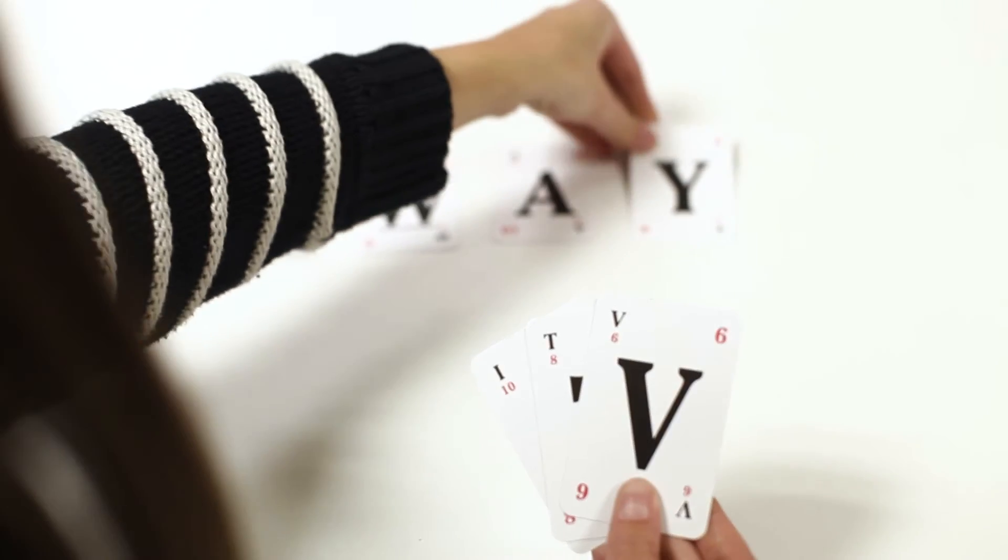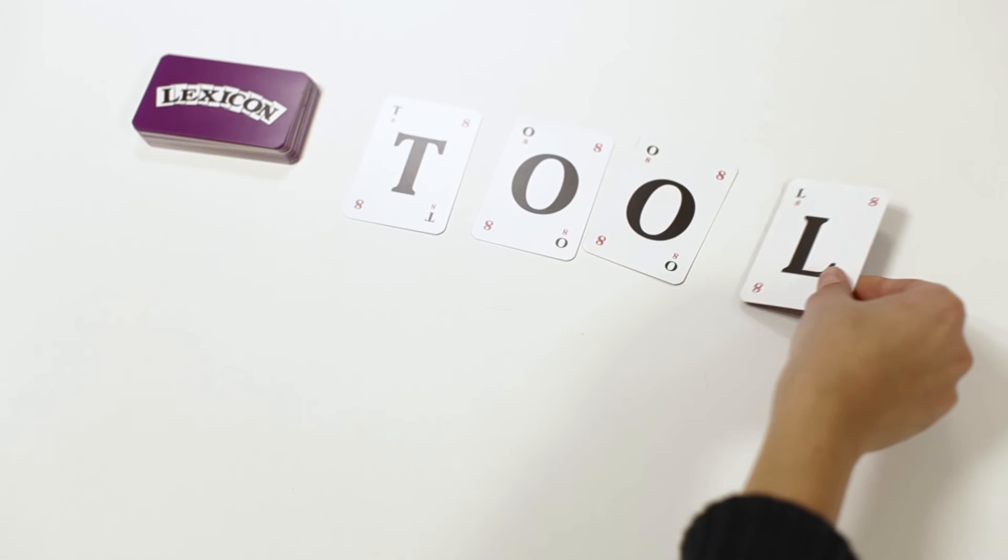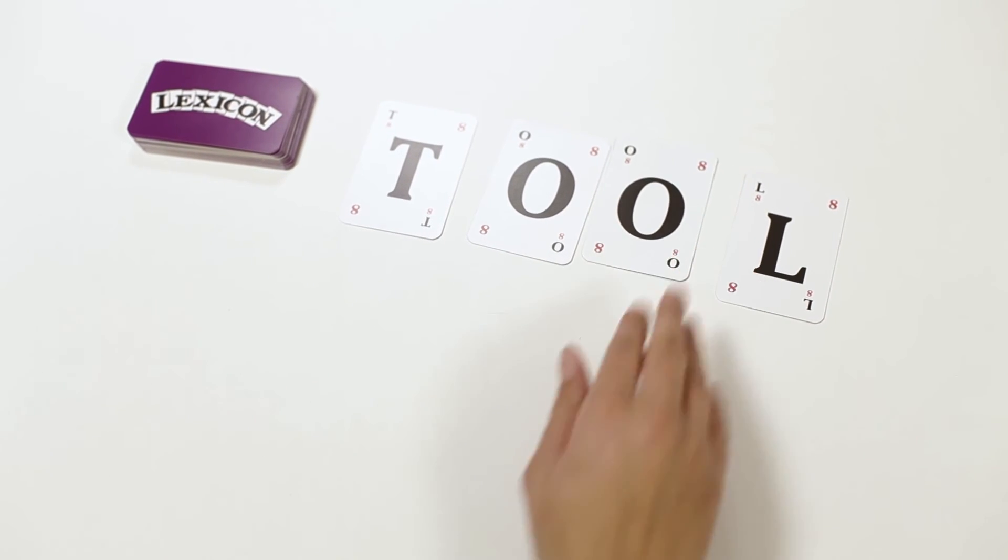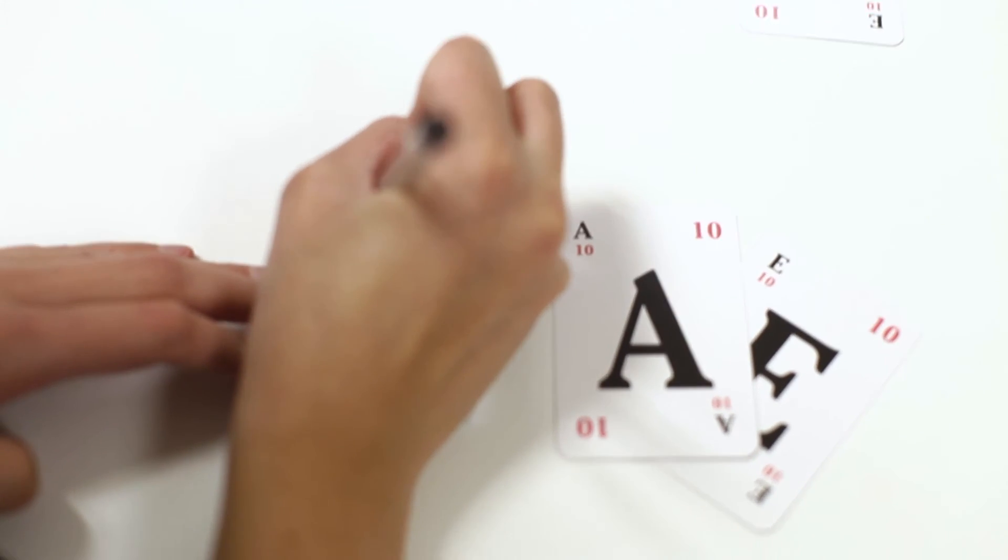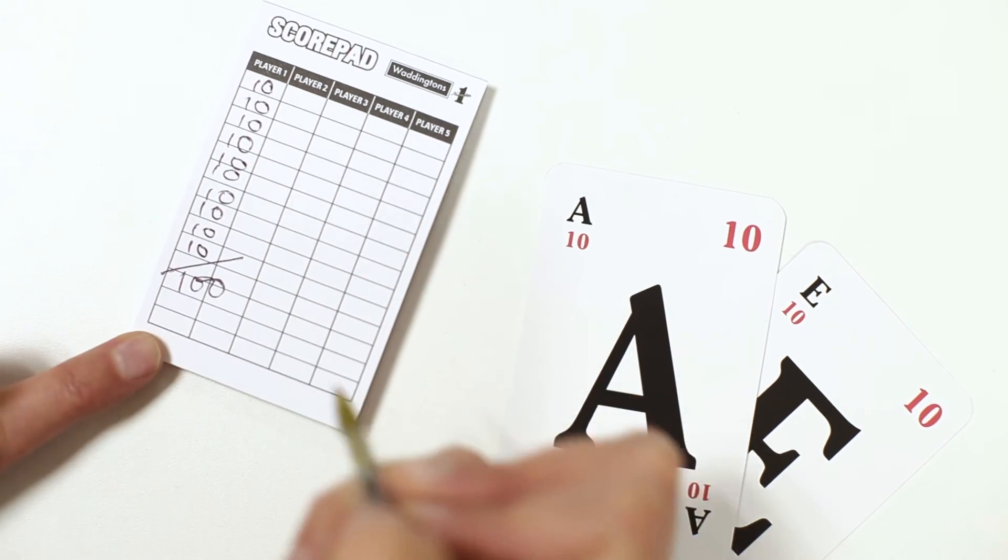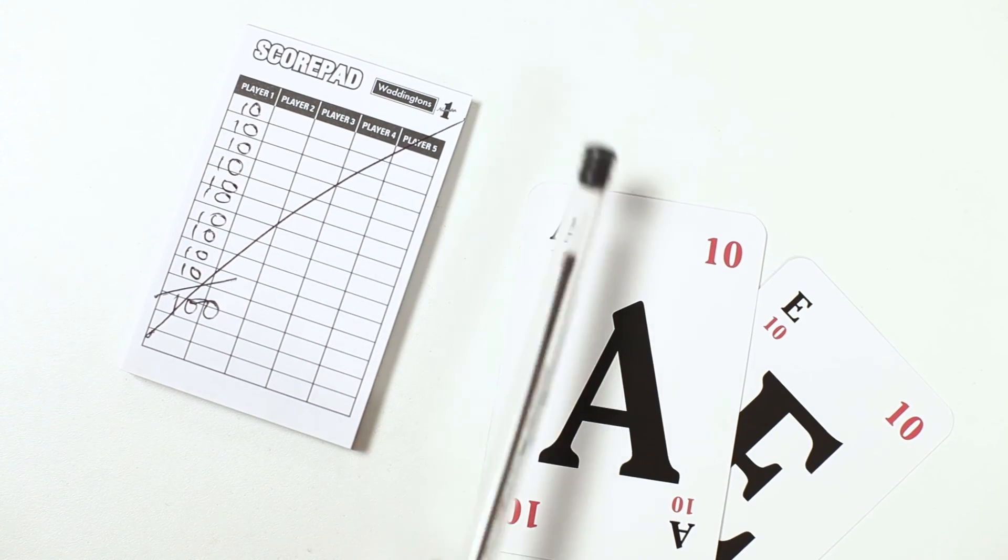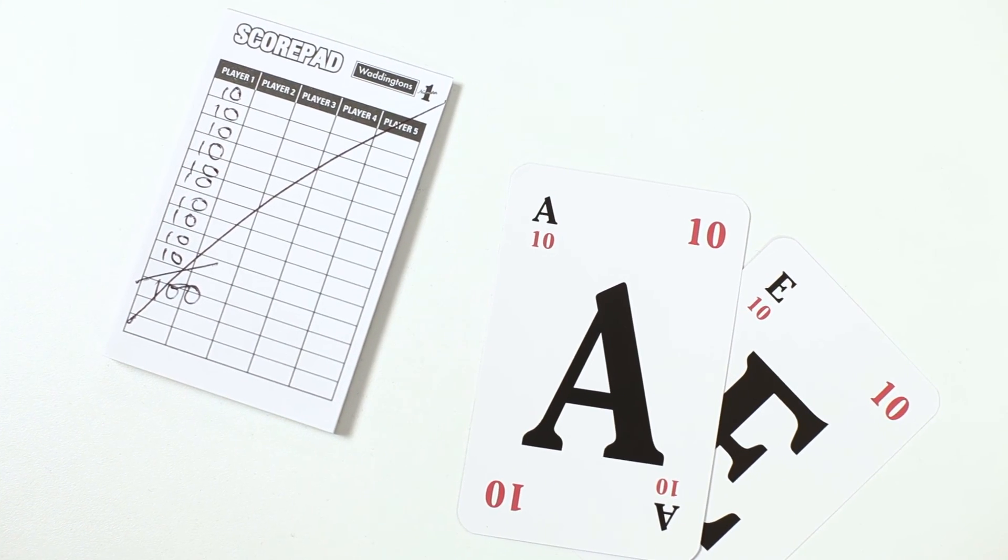Play continues with players either forming words or exchanging cards until one player runs out of cards. To score the game, players add the values of their remaining cards together and enter as round one on the score pad. The first player to reach 100 has to retire from the game and the others continue until only one player remains. The winner!